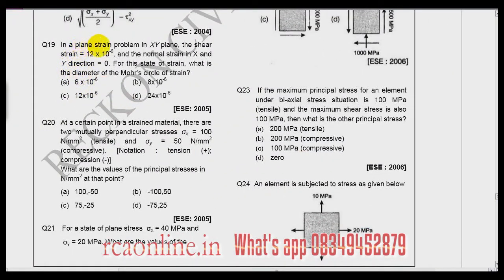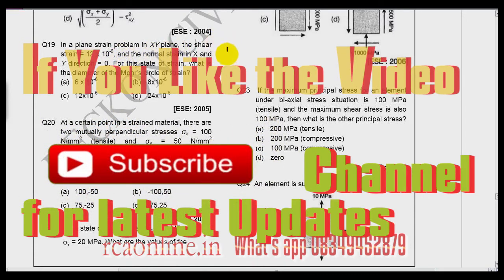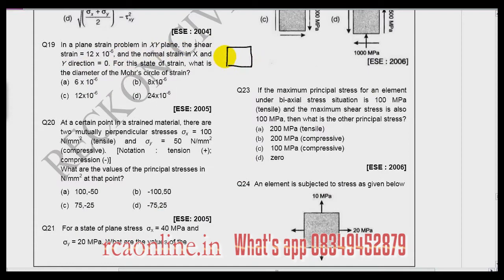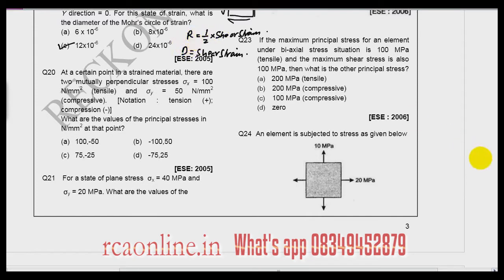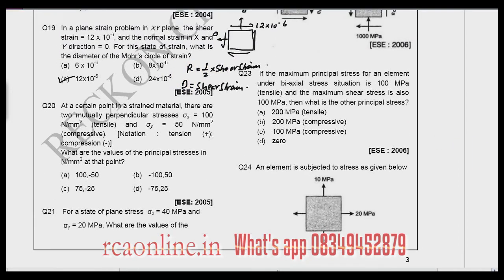Question number 19: in a plane strain problem in the xy plane, the shear strain is 12 times 10 to the power minus 6, and the normal strain in x and y direction is 0. Drawing the Mohr strain circle: all normal strains are 0 and shear is 12 times 10 to the power minus 6. C is the answer. If you are confused about question 19, watch my analysis of strain video where I have explained this concept in detail.